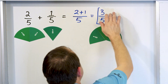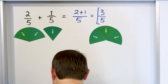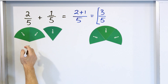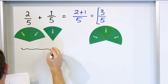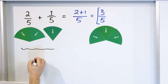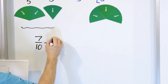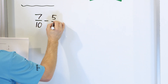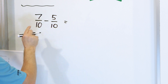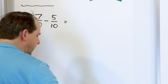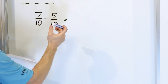We cannot simplify this anymore, so we just leave the answer as 3 fifths. Let's take a look at problem number 2. Let's say we have 7 tenths, and we'll subtract from that 5 tenths. We're subtracting, and we already have a common denominator, which is 10.